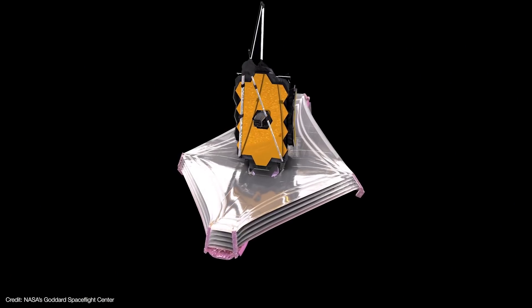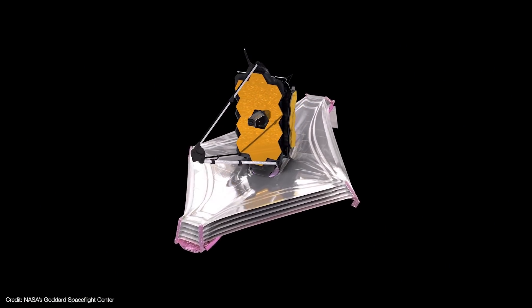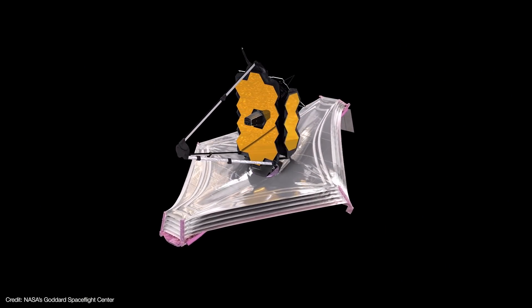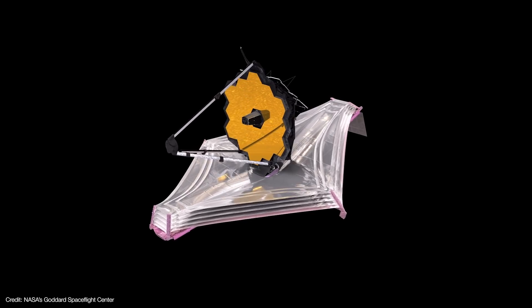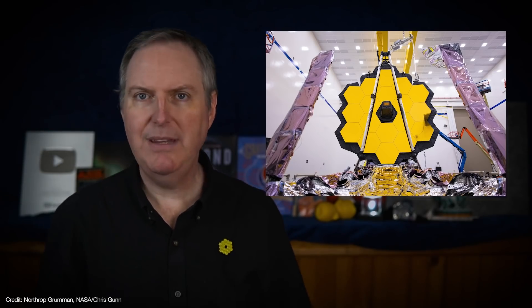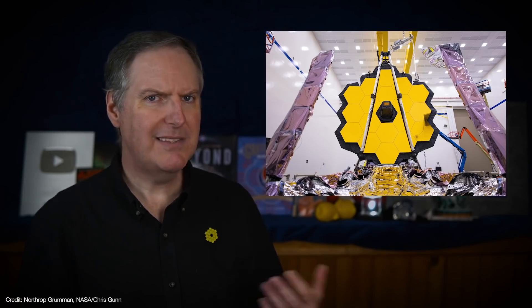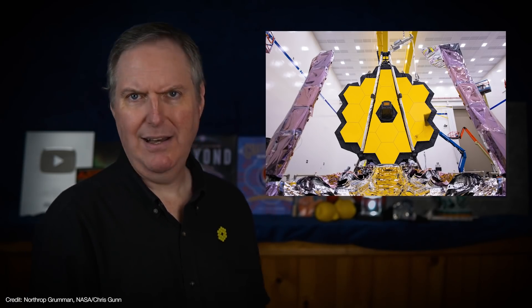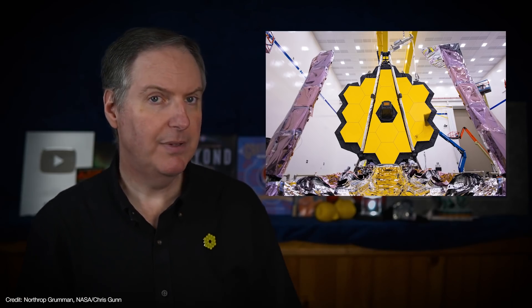That's why six of the mirror segments are mounted on two deployable wings that, along with the secondary mirror assembly, were folded up for launch and deployed once in space. And we talked about the details of the deployments in our last video, so I won't repeat them here. But at the same time, why hexagons? Why not some other shape?